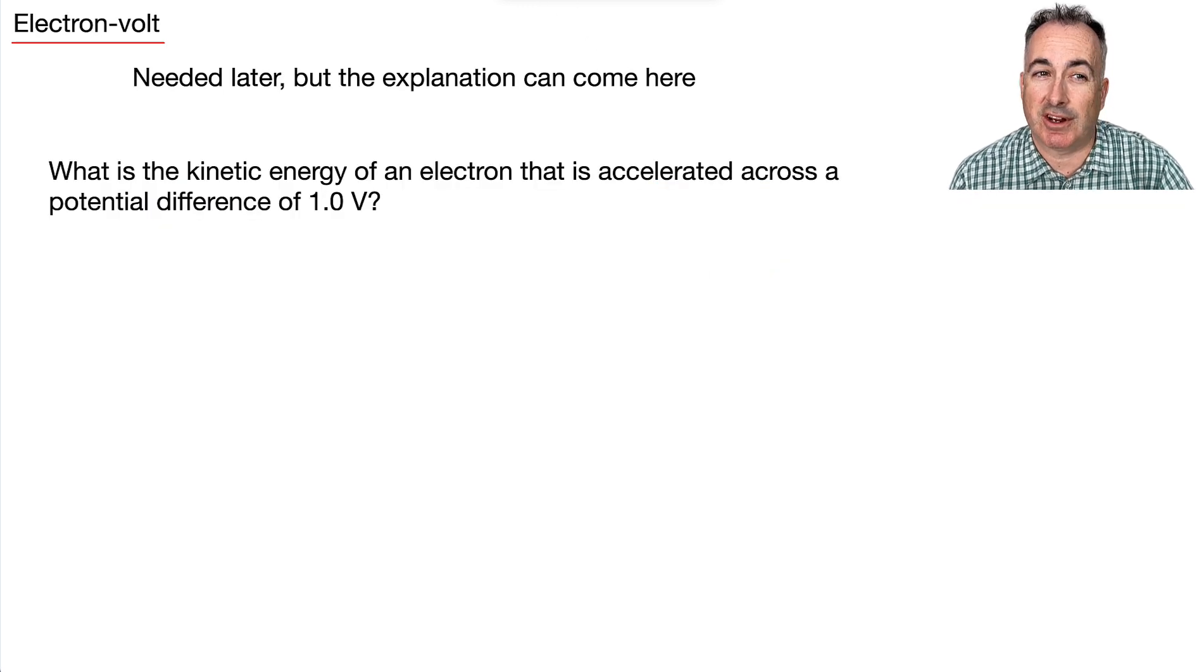Now here's a little definition that might be useful here. Technically we need it later, but I think the explanation can come here. What's the kinetic energy of an electron that's been accelerated across a potential difference of one volt? Well, let's start off with that equation we just learned. V equals W over Q.